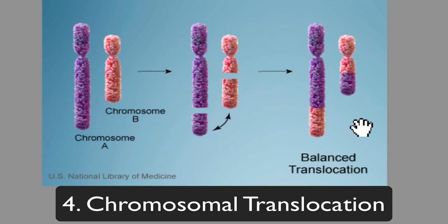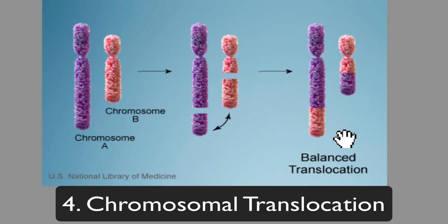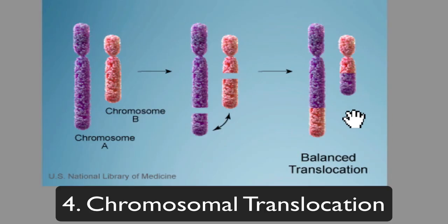In a translocation, a piece of chromosome A and a piece of chromosome B are translocated — flipped. You can see a color difference here. There's a difference between a balanced translocation and a non-balanced translocation, but for now all you need to understand is that you're taking entire pieces of one chromosome and switching them with an entire piece of another chromosome.